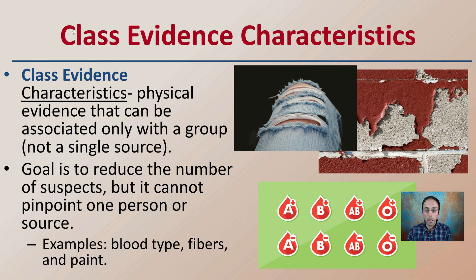For example, if we identify A-positive blood at the scene, that will eliminate other blood types but won't specify an individual person. Similarly, if we find certain fibers, we might find a garment they may match closely with, but it doesn't confirm it was that specific garment.